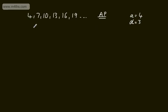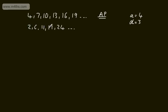If we now look at a different sequence — 2, 6, 11, 17, 24, and so on — it's going up by 4, then 5, then 6, then 7. This is not arithmetic, because it's not going up or down by a fixed amount.